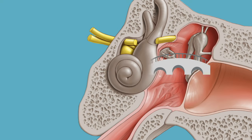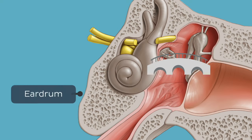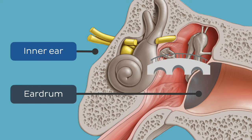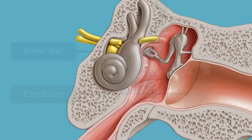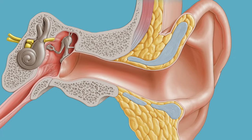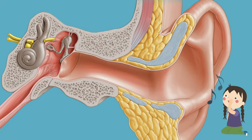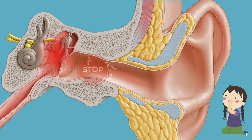They form a bridge between the eardrum and the inner ear, which makes possible the transmission of sound from our surroundings. So you can imagine that in the case of inflammation in the middle ear, your hearing will most likely be affected.